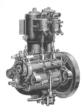Many two-stroke engines use a crankcase compression design, where a partial vacuum draws the fuel-air mixture into the engine as the piston moves upwards. Then as the piston travels downward, the inlet port is uncovered and the compressed fuel-air mixture is pushed from the crankcase into the combustion chamber. Crankcase compression designs are often used in small petrol engines for motorcycles, generator sets and garden equipment. This design has also been used in some small diesel engines, however it is less common.